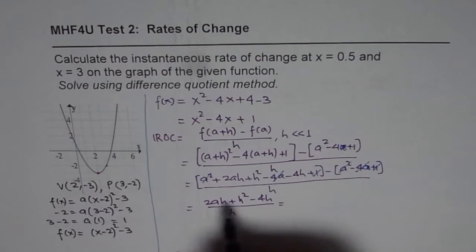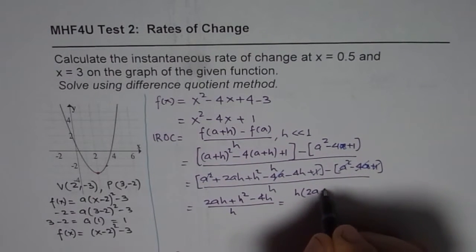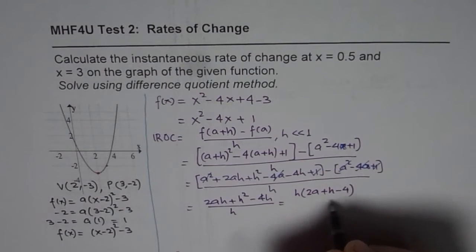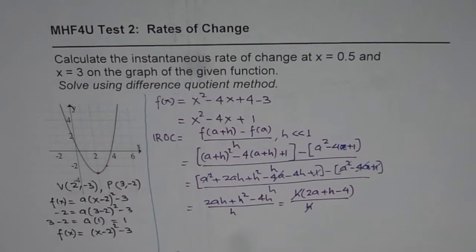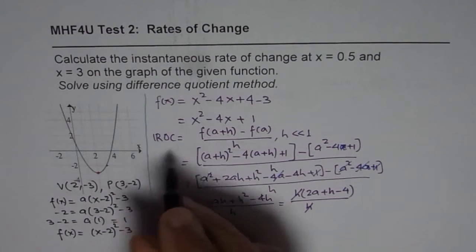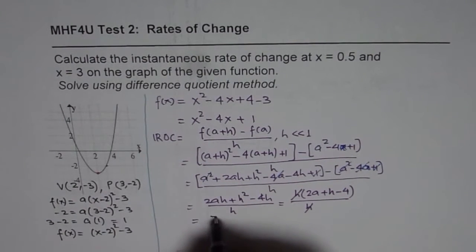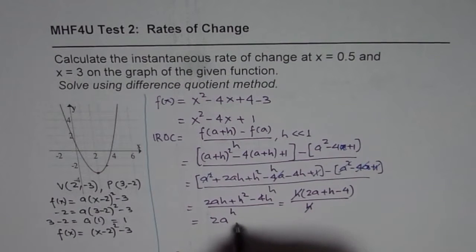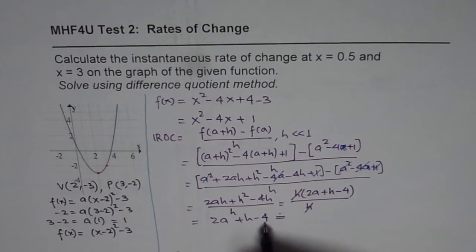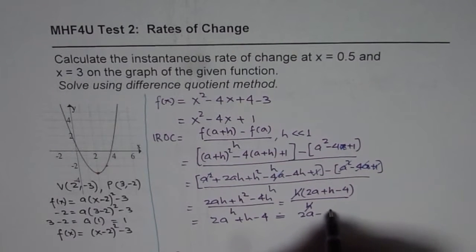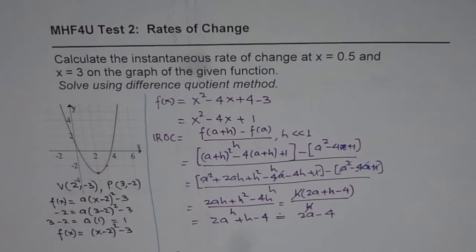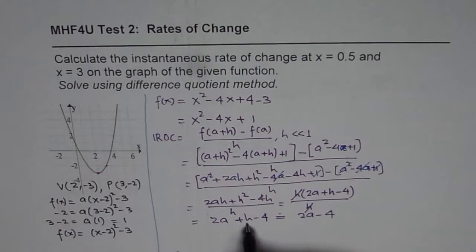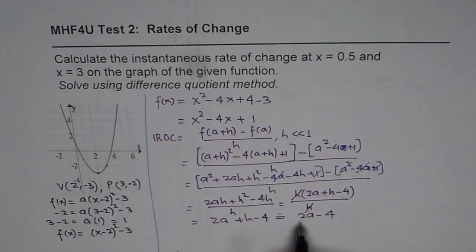We take h as a common factor to get h times (2a + h - 4) divided by h. The h and h cancel, giving instantaneous rate of change equals 2a + h minus 4. Since h is very small we can write this as approximately 2a minus 4. Here h is 0.001, which we neglect compared to 4. So this gives us the instantaneous rate of change at any point a.